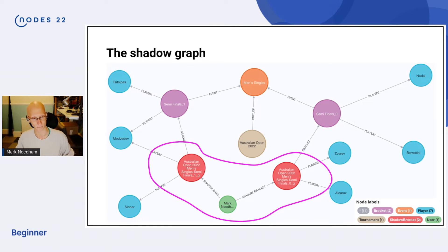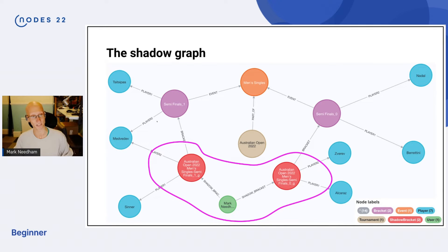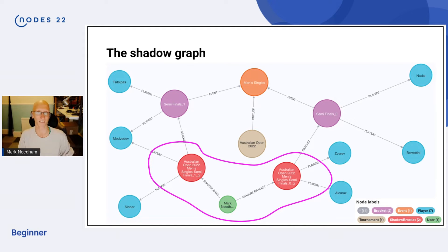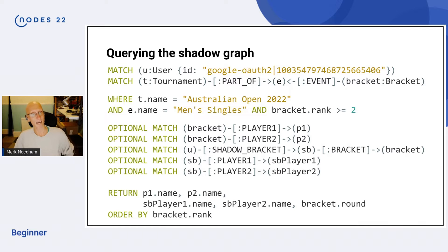We connect the shadow bracket to the actual bracket itself. My prediction is player one is going to be Sinner, player two is going to be Medvedev. Down here it shows the users — that's me — and that's my shadow bracket. My other shadow bracket has Alcaraz and Zverev. I got this one completely wrong. The actual result is Berrettini and Nadal. Down here I got one of them correct — I got Medvedev in the right place but put Sinner in the wrong place. Players can only go to one part of the draw at any given round.